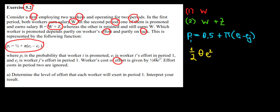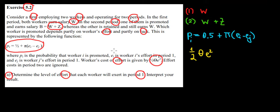We have the cost of effort given by this term. In part A we want to determine the level of effort each worker will put in period 1. The worker decides for himself what effort to put in, so he must maximize his own utility. Because we work with probabilities and uncertainty, we work with expected utilities.